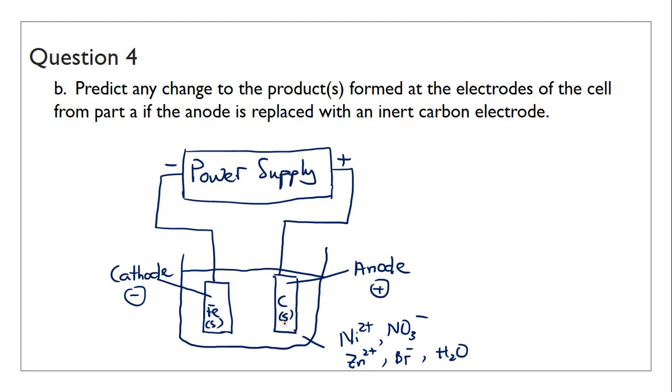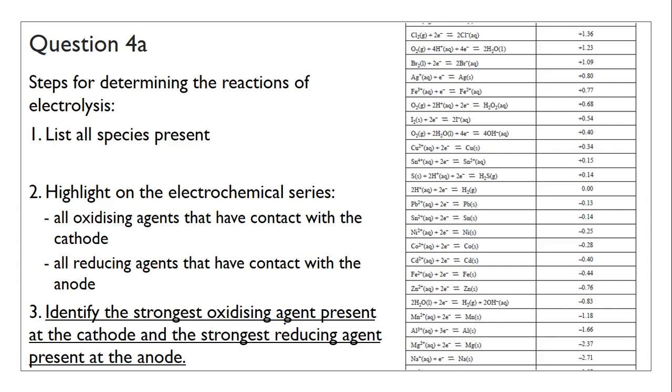The electrodes is a reactive electrode, but the other one is inert. The question is, would this change anything? We'll go back to the steps again. If I list everything present for the third time, I have nickel ions, nitrate, zinc, bromide, water, and copper.